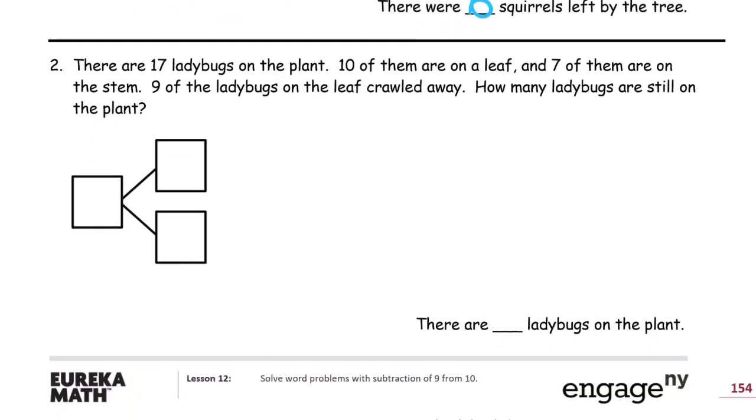Number two. There are seventeen ladybugs on the plant. Ten of them are on a leaf and seven of them are on the stem. Nine of the ladybugs on the leaf crawled away. So we have how many ladybugs are still on the plant. So we have seventeen, that's the total, and they're in two parts. One of the parts has ten on the leaf, L. And then seven are on the stem, S.